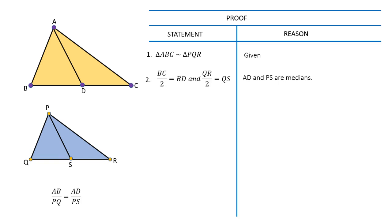Because AD and PS are medians from vertex A and P of triangle ABC and triangle PQR. Since triangle ABC is similar to triangle PQR, hence the ratio of corresponding sides will be equal.